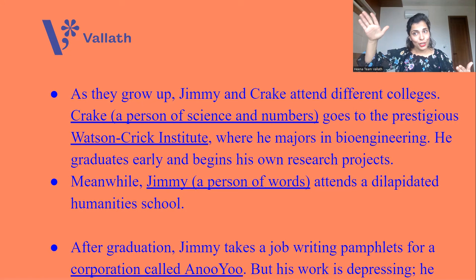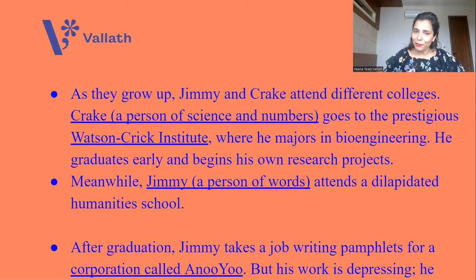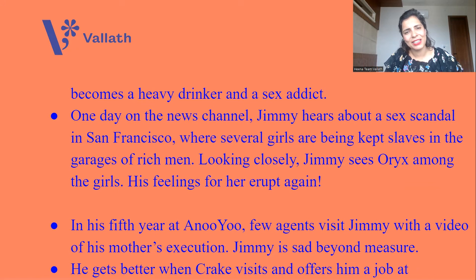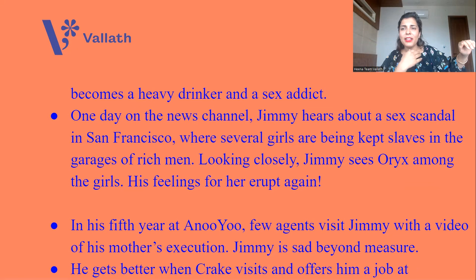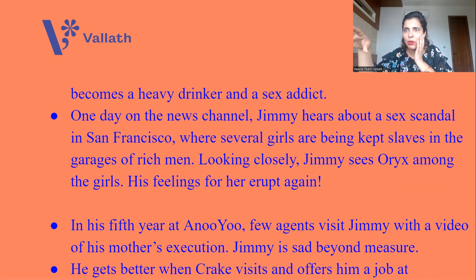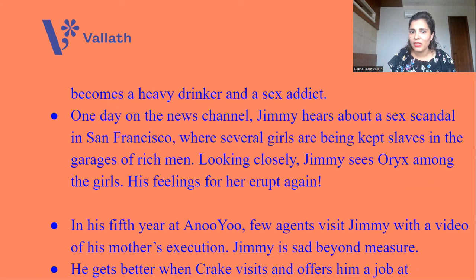After graduation, Jimmy takes a job writing pamphlets for a corporation called Anu Yu. But his work is so depressing that he becomes a heavy drinker and a sex addict. One day on the news channel, Jimmy sees a sex scandal in San Francisco where several girls are kept as slaves in the garages of rich men. Looking closely at the TV, Jimmy sees Oryx among these girls, and his feelings for her erupt again.